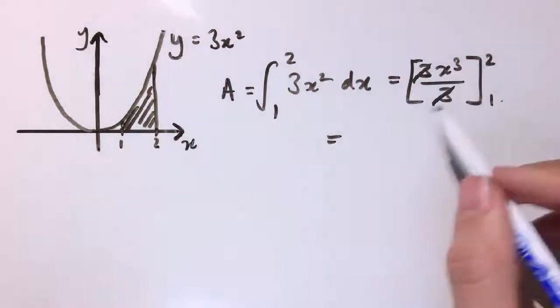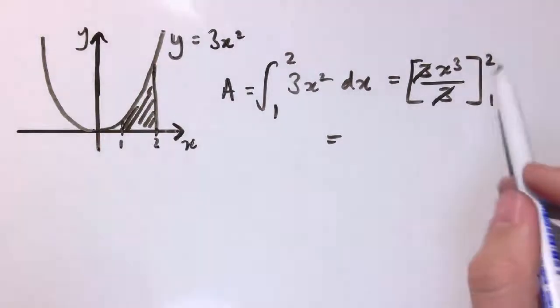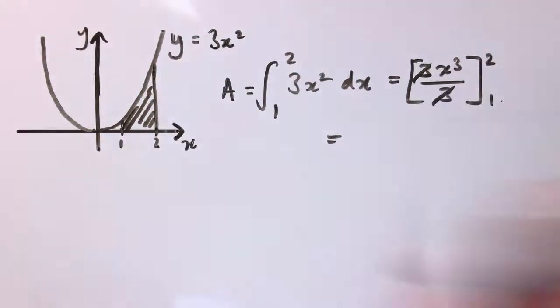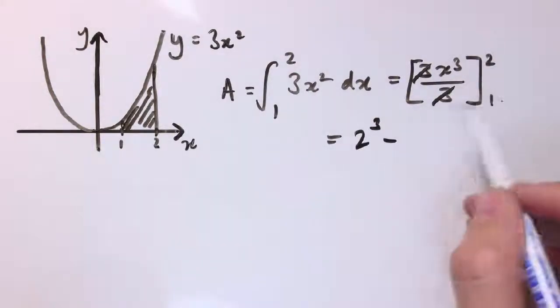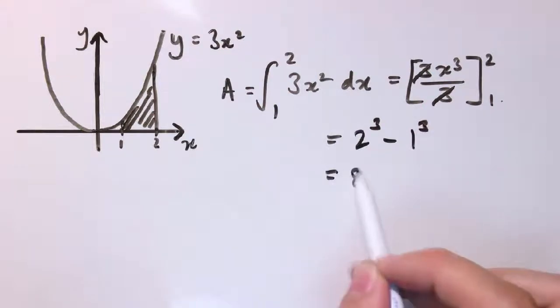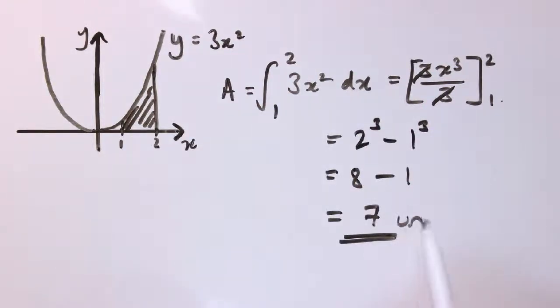So what this means is we substitute in the upper value which is 2, let's just enter x cubed here, so we get 2 cubed and I subtract whatever I get when I put in 1, so that's 1 cubed. So this is 8 minus 1 which is 7 units squared. No particular units on this graph, so we don't really need to write units squared, but you can do if you want to.